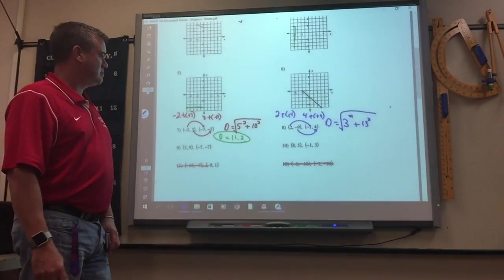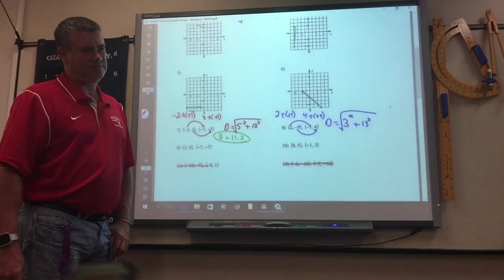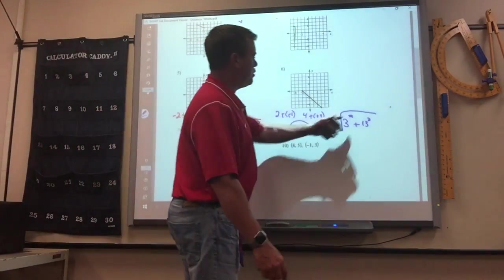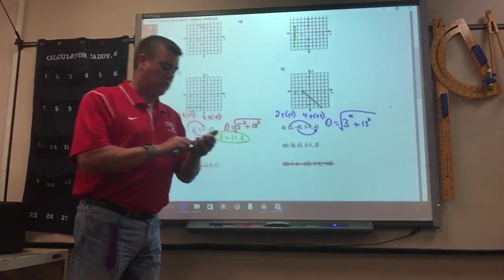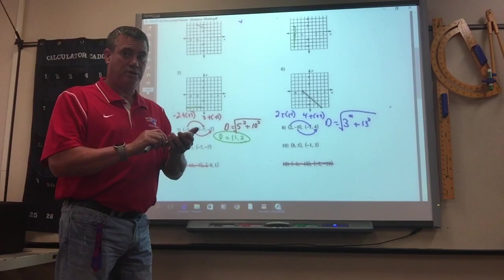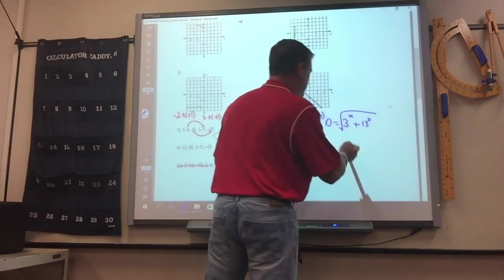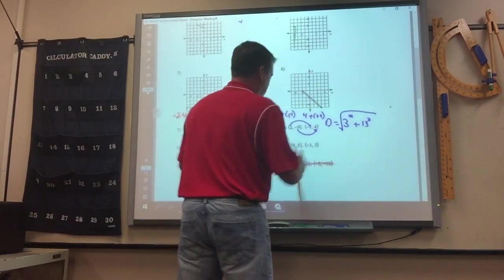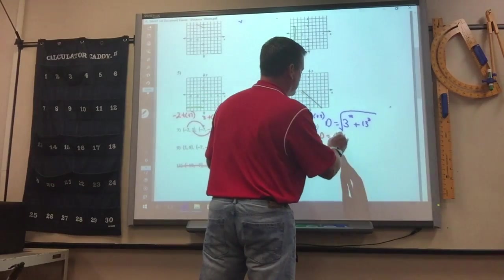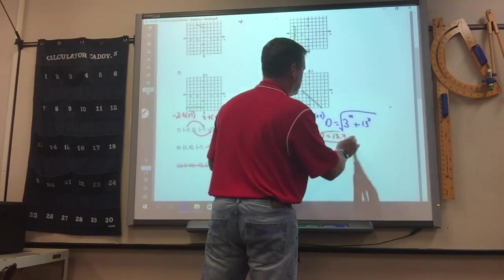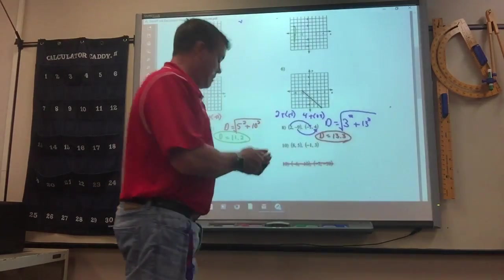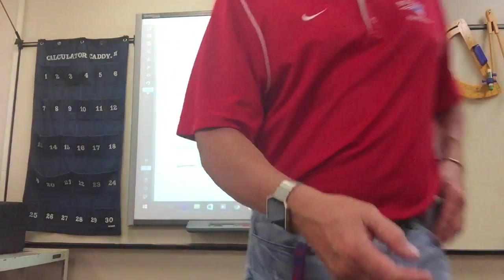Do you think we could do 11 and 12 for extra credit? Sure. So number 8, the distance is 13.3. So yeah, you can sure do 11 and 12 for extra credit if you want. Great news.